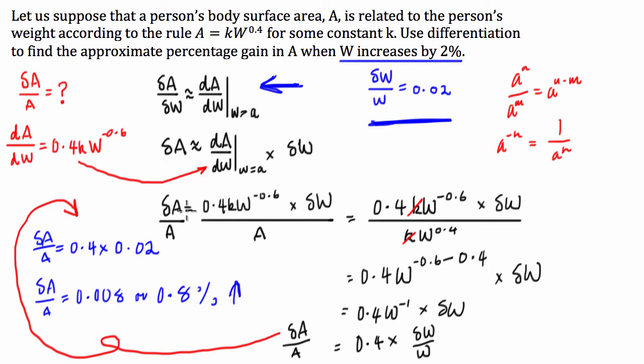So what we're able to do after we did that is once we had it all over A, we could then substitute A for what we knew A was equal to in the question, do a little bit of algebra. The rest of the question was algebra. We just manipulated the formula to get delta W over W, which we already knew was 0.02. And then once we had done that, it was just a case of multiplying two decimals together to get 0.8%.